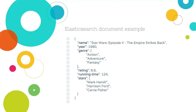It is quite easy to read compared to several join results of a relational database table. Documents have fields such as name, year, genre, and other attributes as well.